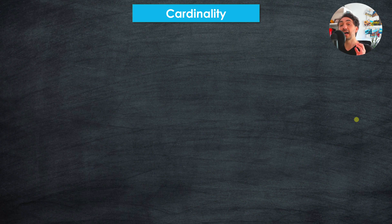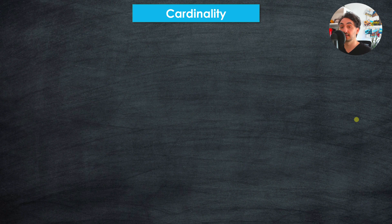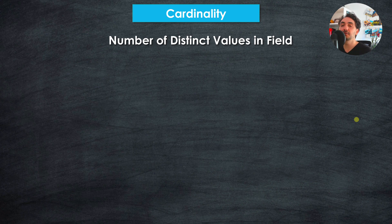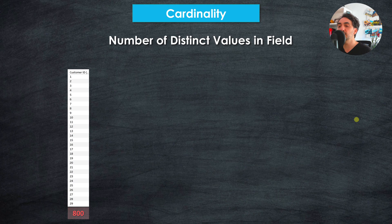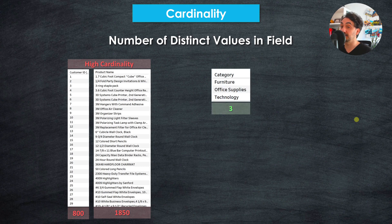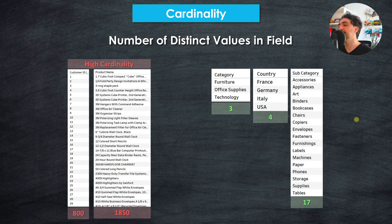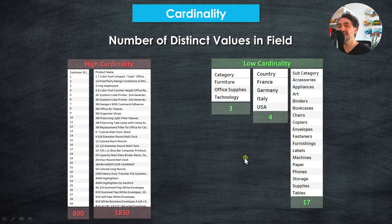Another filter tip for optimizing performance is to avoid using dimensions with high cardinality as quick filters. First, let's understand cardinality: it's the number of distinct values in a field. For example, customer ID has around 800 values and product names are also many — those are high cardinality dimensions. On the other hand, category has only three values, countries has four, and subcategory has 17 — those are considered low cardinality.